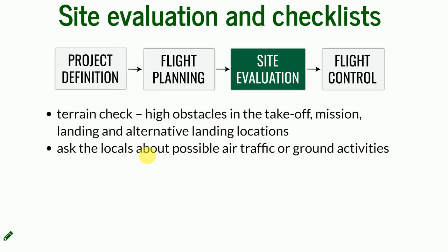You also need to ask the locals first. In North Carolina, it is illegal to fly without notifying the landowner. But even when you know it's a public area, local people can know much more about air traffic or ground activities. Maybe something is going on nearby that you have no idea about. Especially in populated areas, it is better to have the knowledge of people who live there because they know the area best.